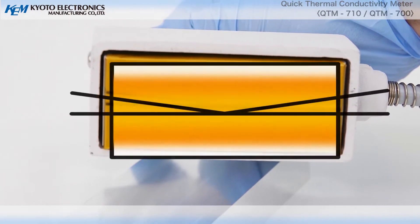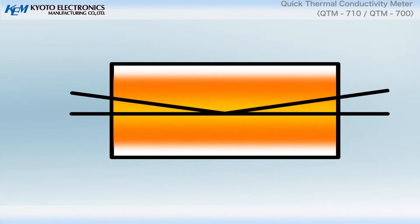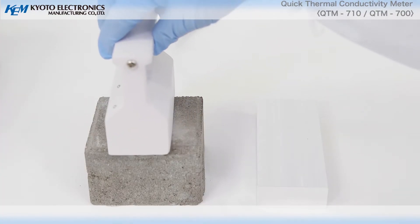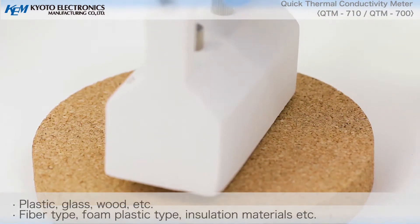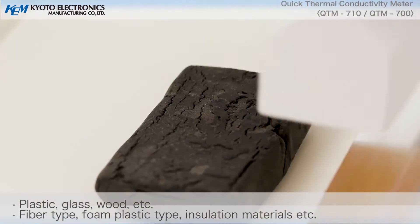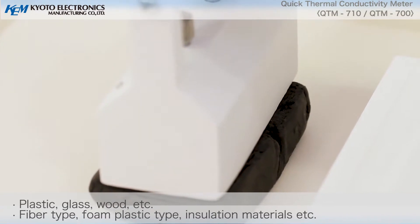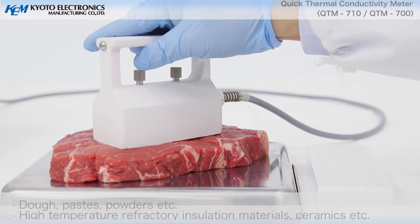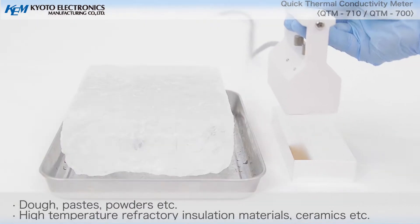Using the hot wire method. Collaborating with a standard specimen of known thermal conductivity, various block-shaped samples ranging from industrial materials to wood, rock, and food can be measured in a short time to determine thermal conductivity.